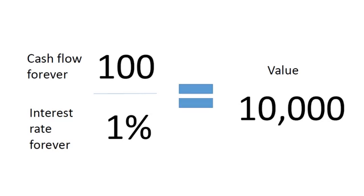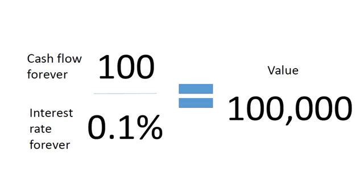Now we can go to an even more extreme example, where we drop the rates to 0.1%. That seems pretty extreme, but what we've seen in the last two years, that's actually happened — we've gotten even negative rates. So when you get to these incredibly low rates, the value shoots up massively assuming cash flows stay the same. What we've seen in the markets is not a whole lot of growth in that top part of the equation — the 100. If you look at the last eight years, we haven't seen an incredible increase in growth. The decline in interest rates has been way more severe than the increase in the cash flows.